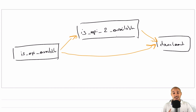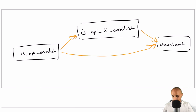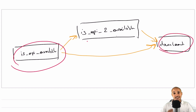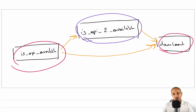To better explain why you might need to use the BranchPythonOperator, let me give you a very simple use case. Imagine you have a data pipeline with three tasks. If the API is available, you want to execute the task 'download'. If the API is not available, you want to execute 'is API2 available', and if API2 is available, then you execute 'download'.